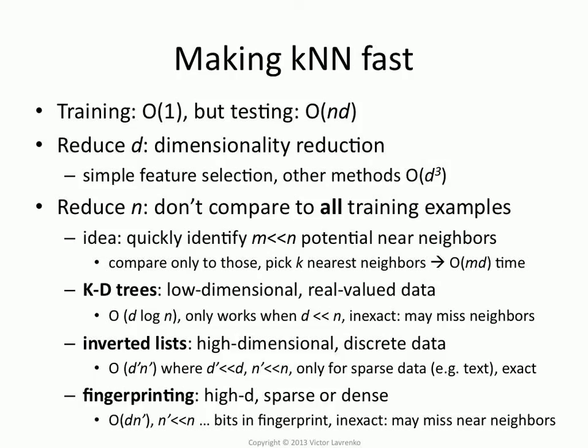A more promising thing is to try to reduce n, which is the number of examples you have. The basic idea is you approximately pick m out of n instances, and then you do the comparison within that smaller set m and pick your nearest neighbors out of that subset. Your complexity is then m times d, where m is as big as you pick it.